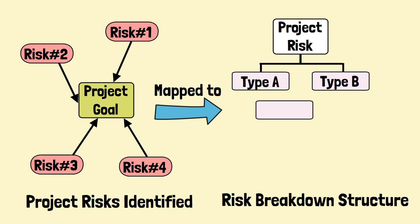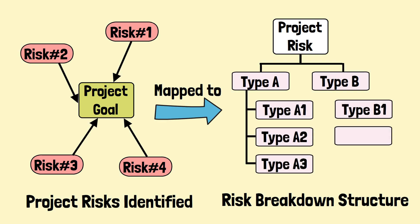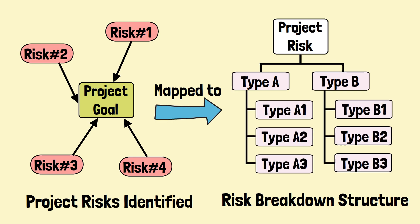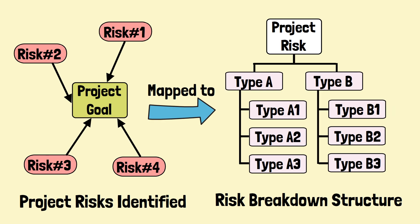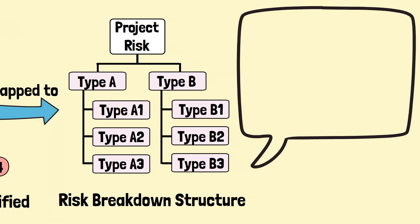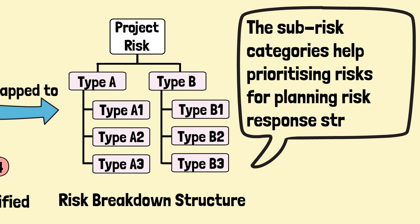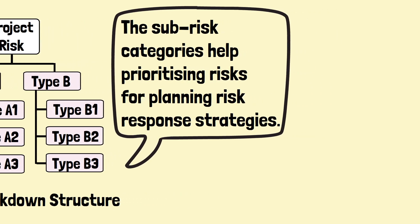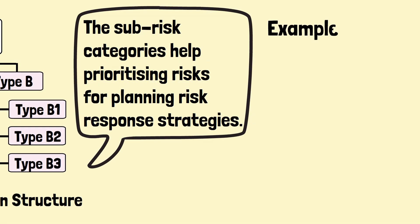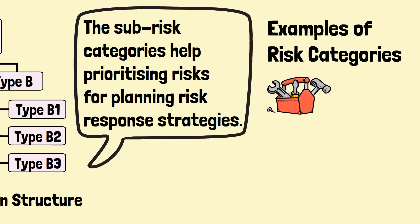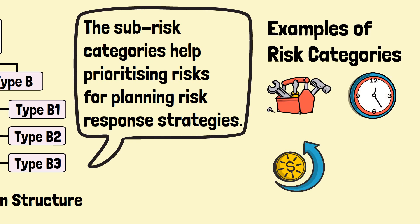It breaks down these risks into smaller, more manageable categories. This makes it easier to identify and prioritize risks and develop effective risk response strategies. Common RBS categories include technical risks, schedule risks, financial risks, and resource risks.